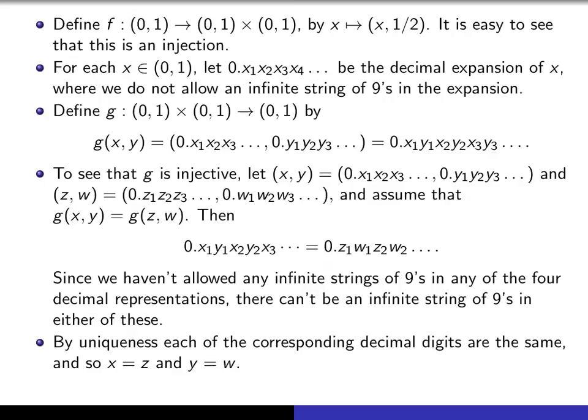That then forces x to be equal to z and y equal to w, and therefore g is injective, and so by the Cantor-Schröder-Bernstein theorem, the proof is complete. We've managed to find injections going both ways.